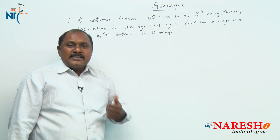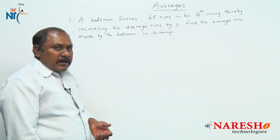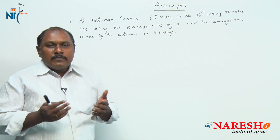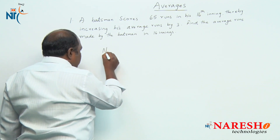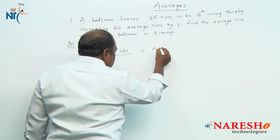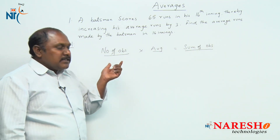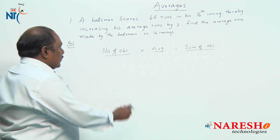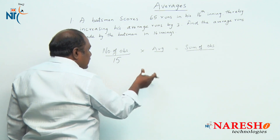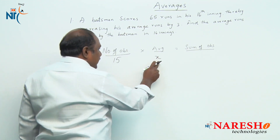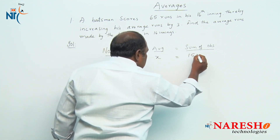We are talking about the 16th inning, so definitely he has already played 15 innings. Let us try to solve this problem using a formula and later see how to solve it in a very simple way. Average is sum of observations by number of observations, so number of observations multiplied by average gives us the sum of observations. In this 15 innings, let us assume that the average runs he scored is x. So the total runs he scored in 15 innings should be 15x.